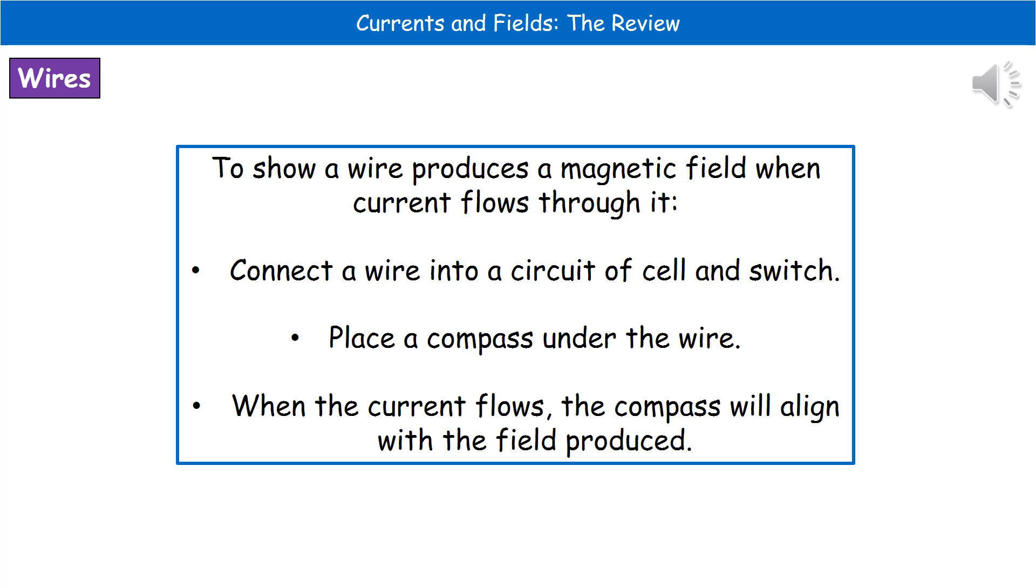If you were asked how we could show in the lab or in an experiment how to prove that a wire produces a magnetic field when current flows through it, then all we'd need to do is connect our wire into a circuit, just a very basic one with a cell and a switch, and then place a compass under that wire. What we'd find is that when you close the switch and the current's flowing, the alignment of the compass is going to go along with the field lines for that wire. You'll see the compass needle move away from pointing towards our magnetic north pole for the Earth, towards the field lines being created as a result of the current flowing through the wire.